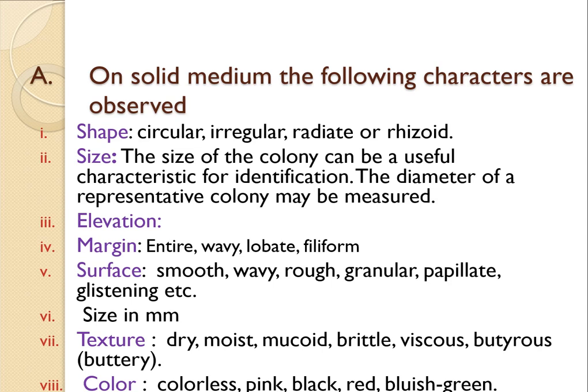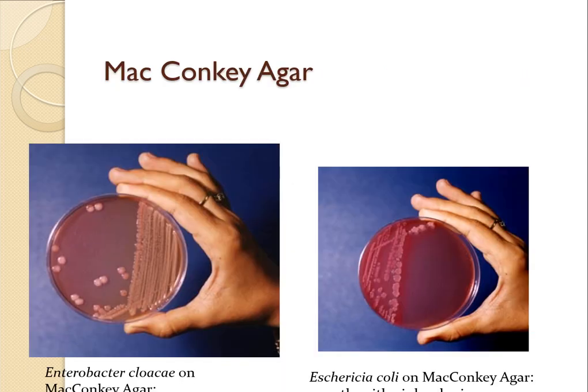Texture can be measured — whether the colonies are dry, moist, mucoid, brittle, or viscous. We can also study the color of the colony — whether the observed colonies are colorless, pink, black, reddish, bluish, or green. If colorless, we can observe whether there is any black pigmentation in the center of the colony.